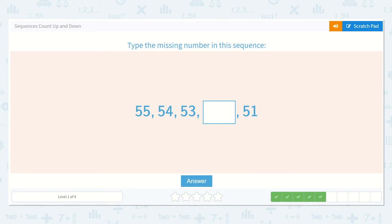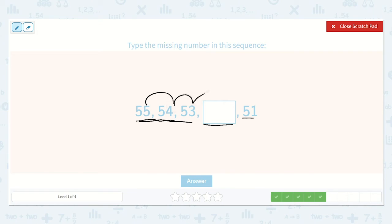Now, let's see what we are counting by. We are counting down, I can tell, because these numbers are getting lower. So 55, 54, 53, something, 51. Look, this is going down by 1 every time. 55, 54, 53. What do you think would be next? 52, yeah. 53, 52, 51. So 52 is our answer.